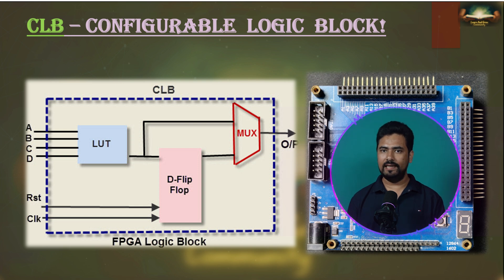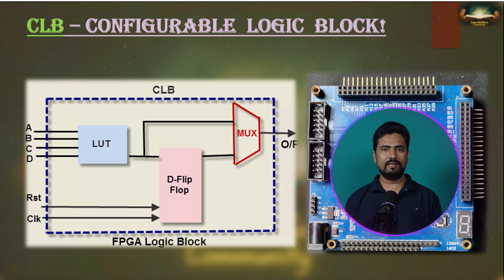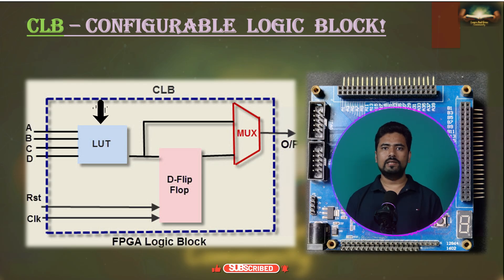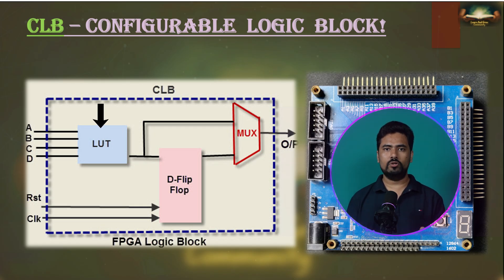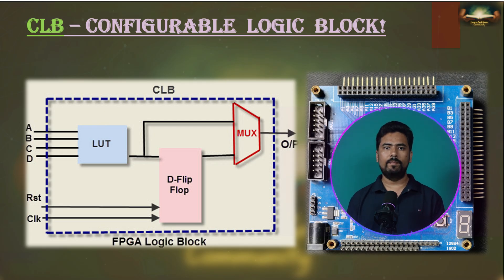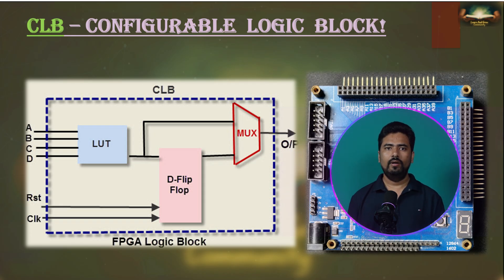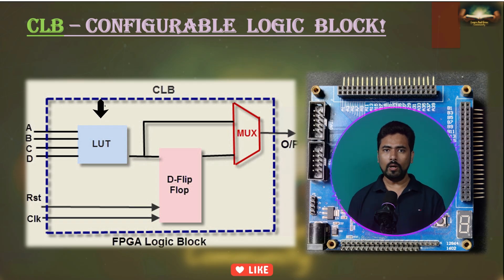Each CLB contains carefully organized logic and registers. This diagram shows an example of a CLB. Different FPGA vendors use different names for CLBs — for instance, Intel calls them Adaptive Logic Modules while Xilinx has its own terminology. The CLB contains a lookup table, or LUT. In this example, we have a 4-input LUT with inputs A, B, C, and D. The lookup table is just like a truth table and is used to implement a combination of logical functions. For instance, the LUT can be configured to act as a 4-input AND gate or a 4-input OR gate. It can also implement more complex 4-input logical functions that require multiple logical gates. The LUT is a powerful and flexible component within the CLB.